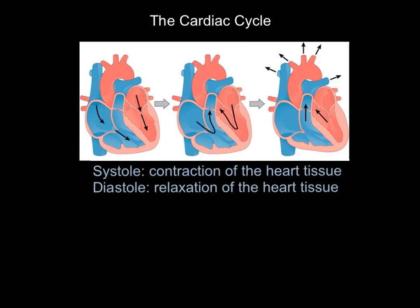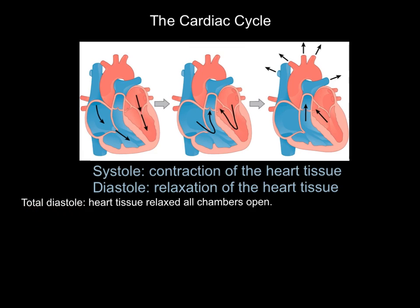The cardiac cycle is the order in which things go. The first stage is total diastole, or simply diastole. The heart tissue is relaxed and all the chambers are open — here's an atria, here's an atria, here's a ventricle, here's a ventricle. Remember the heart is back to front: the left-hand side as we look at it is actually the right-hand side of your heart, because the heart sits in your chest the other way around. At this first stage, all four chambers — both atria and both ventricles — are open, so we have diastole of the heart tissue.